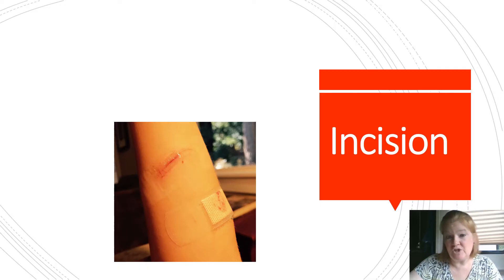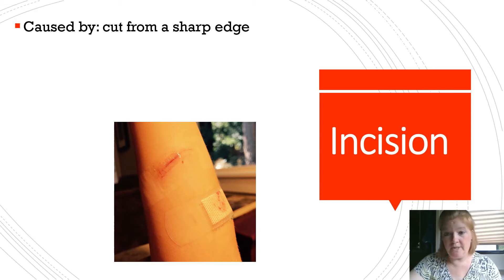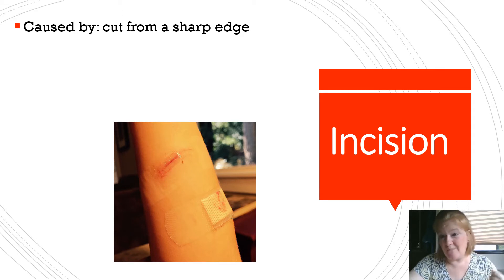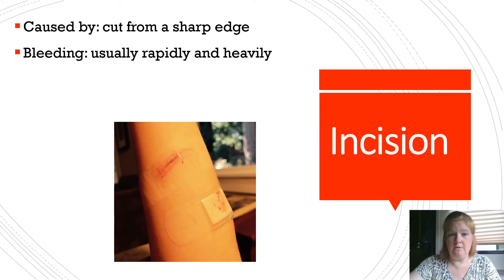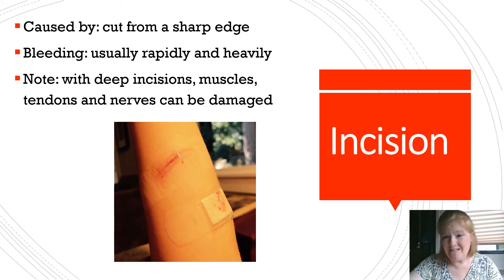An incision is caused by a cut from a sharp edge. A surgeon could make an incision before performing surgery, but you could also get one when chopping potatoes. The bleeding is usually rapid and heavy. With deep incisions, muscles, tendons, and nerves can all be damaged, which becomes more serious.